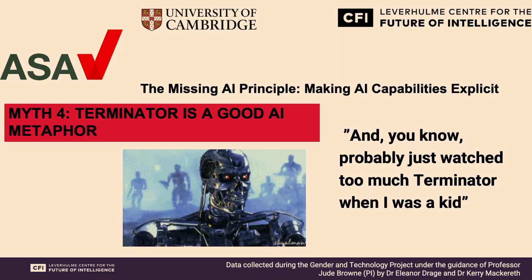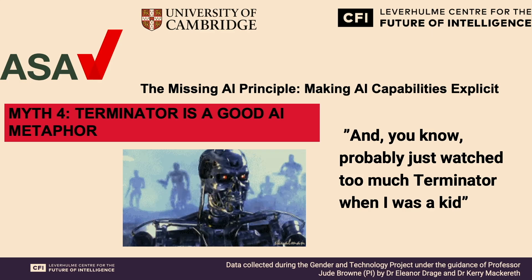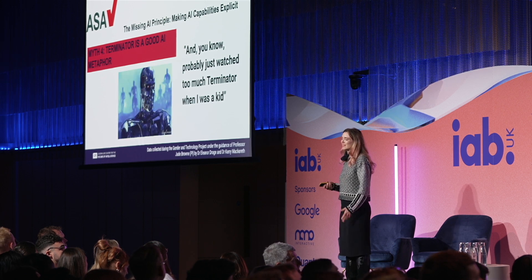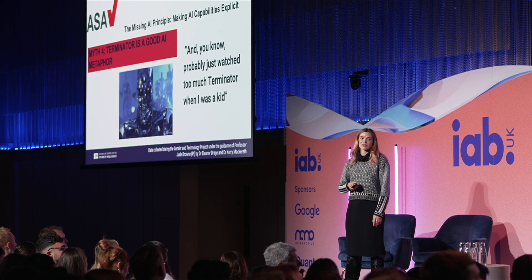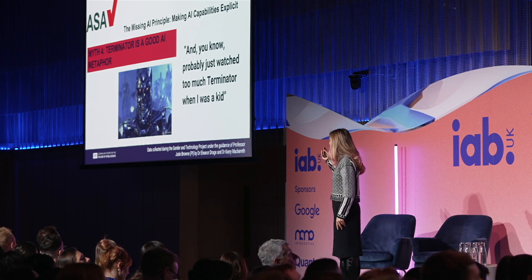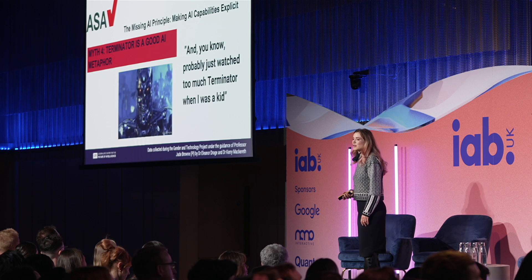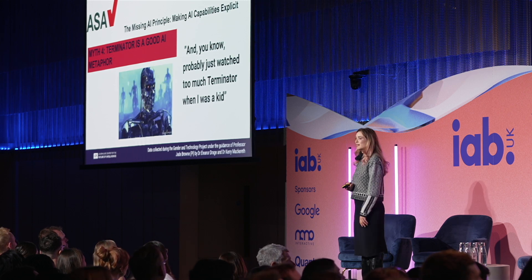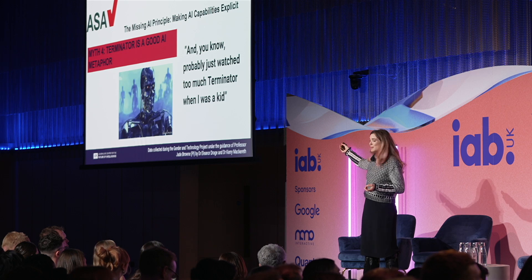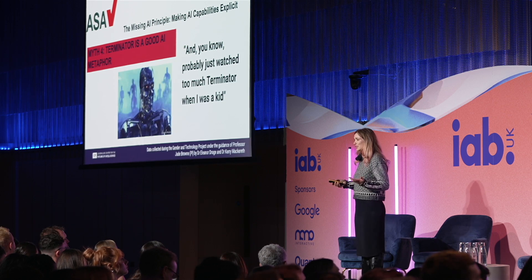Myth four. We've all talked about the Terminator when thinking about AI. When I interviewed engineers, 100% of those who used science fiction analogies talked about films with humanoids with guns. This militarization of AI is a problem, because not all AI is like that — and we don't want to build it, but if we keep talking about it, we'll build it. I've been working with the UK government's Office of AI to make AI capabilities more explicit in how they're communicated to the public — not hyping AI to seem like the Terminator, but also communicating its limitations: what it can't achieve as well as what it can.